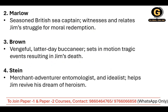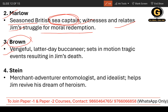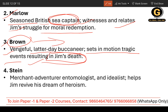The important characters in Lord Jim are: First, Jim himself. Second, Marlow — a seasoned British sea captain who witnesses and relates Jim's struggles for moral redemption, a kind of friend. Third, Brown — a vengeful, latter-day buccaneer who sets in motion the tragic events resulting in Jim's death, essentially the antagonist. Fourth, Stein — a merchant, adventurer, entomologist, and idealist who helps Jim revive his dreams of heroism.